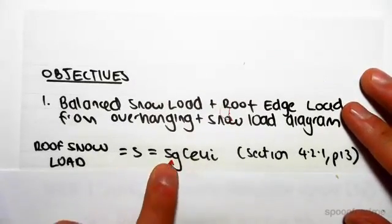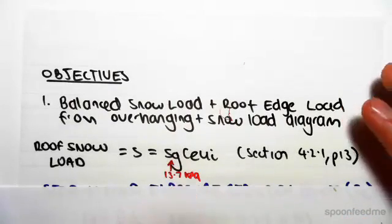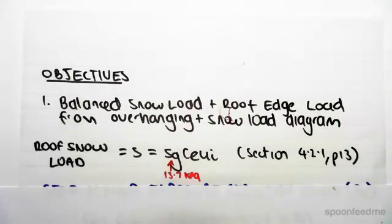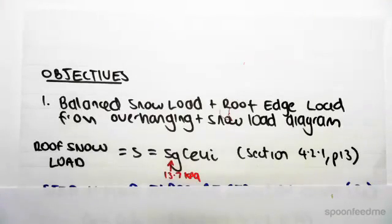given as S, which is Sg, the ground snow load which we found before is 13.7 kPa. We found that in the previous video, I can just show you. So we found 13.7 kPa times by the